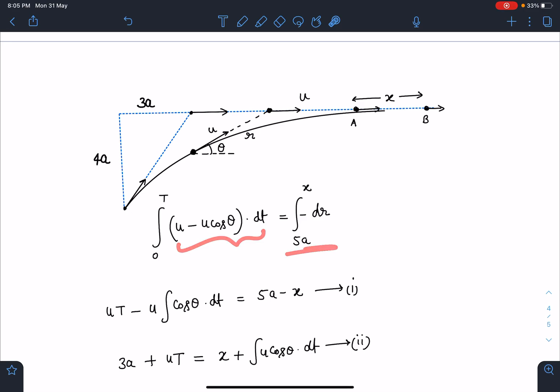When time goes from zero to general time T, the distance initial distance was 5a and finally this is x. So this integral limit will go from 5a to x.